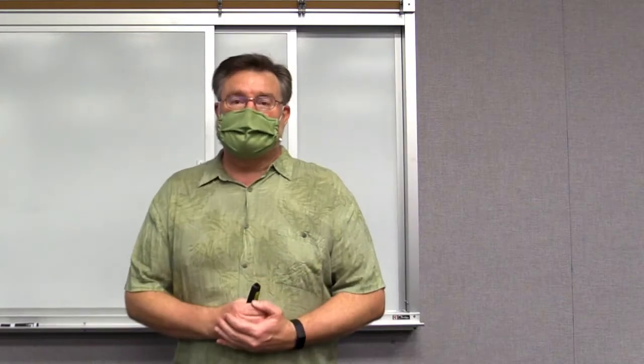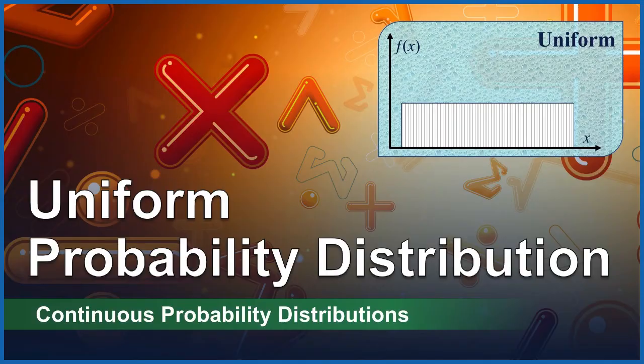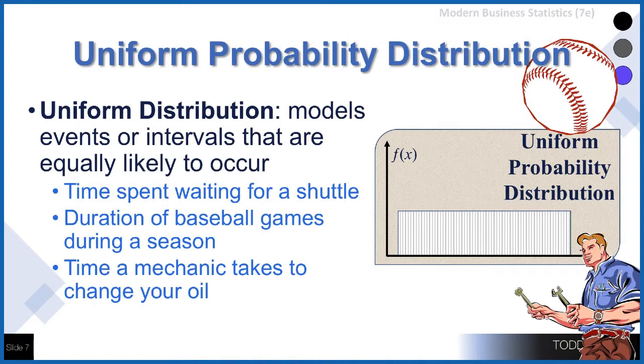The first of the distributions that we want to explore is the uniform probability distribution. This is one of our continuous probability distributions. The uniform distribution is used when the intervals that we are measuring have an equal likelihood of occurring.